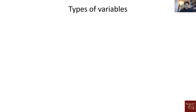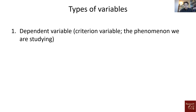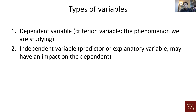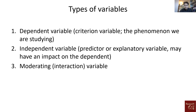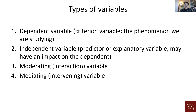Broadly, we have five major types. First is the dependent variable, also called the criterion variable — the phenomenon we are studying. Then we have the independent variable, also known as the predictor or explanatory variable, which may have an impact on the dependent variable. Then we have the moderating variable, also known as the interaction variable. We have the mediating variable, known as the intervening variable. And finally, the control variable.